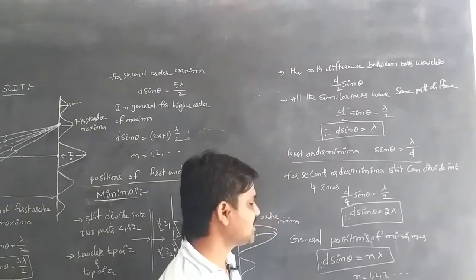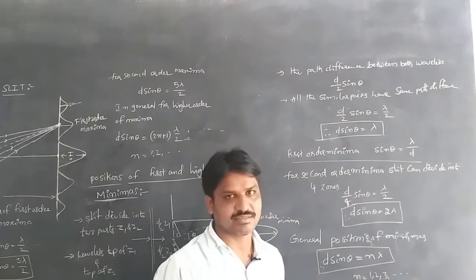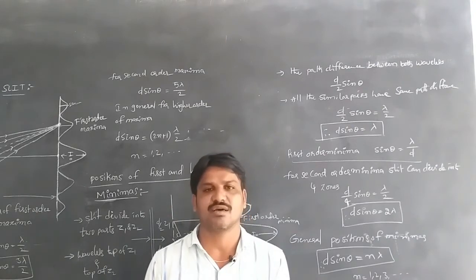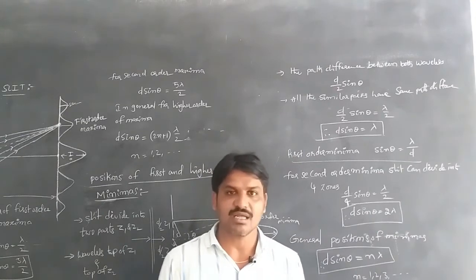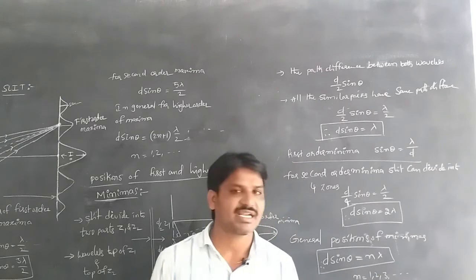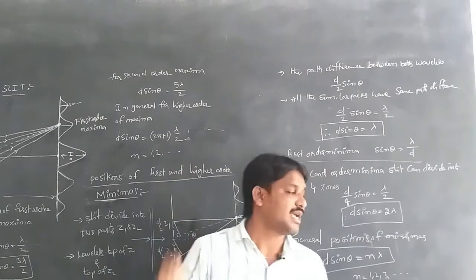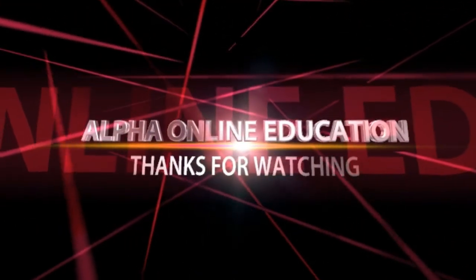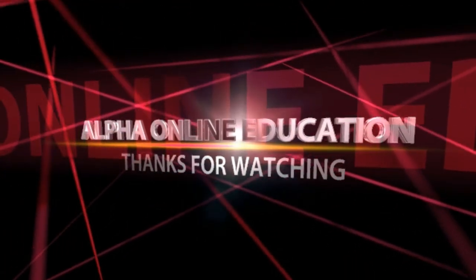For second order minima, the slit is divided into four zones, giving d sinθ = 2λ. In general, the position of the nth order minima is given by d sinθ = nλ, where n is the order number. Using this equation, we can find the positions of all higher order minima on the screen due to diffraction.